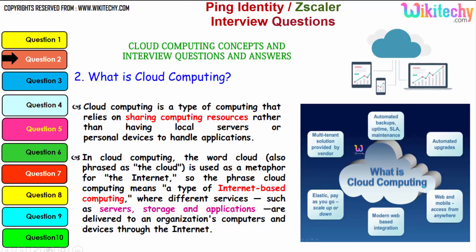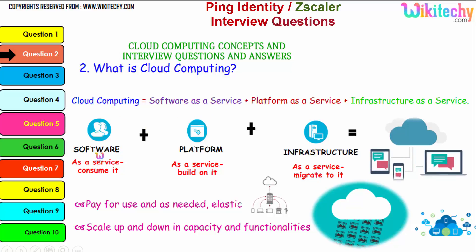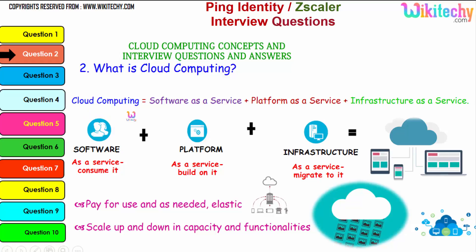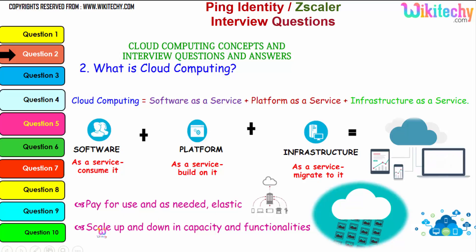These are considered major advantages of cloud computing. Cloud computing consists of Software as a Service, Platform as a Service, and Infrastructure as a Service. The collaboration of software, platform, and infrastructure is referred to as cloud computing. The major advantage is pay-for-use as needed, and elasticity — if you need minimal storage, pay for that; if you need bigger storage, pay for that. You can scale up and down in capacity and functionality.